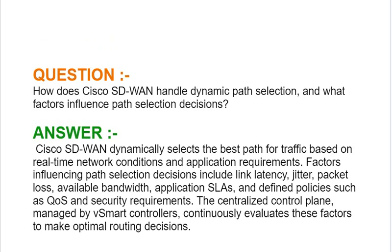Next interview question: How does Cisco SD-WAN handle dynamic path selection and what factors influence path selection decisions? Cisco SD-WAN dynamically selects the best path for traffic based on real-time network conditions and application requirements. Factors influencing path selection decisions include link latency, jitter, packet loss, available bandwidth, application SLAs, and defined policies such as QoS and security requirements. The centralized control plane managed by vSmart controllers continuously evaluates these factors to make optimal routing decisions.